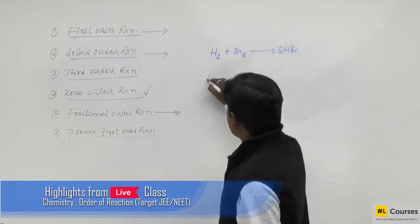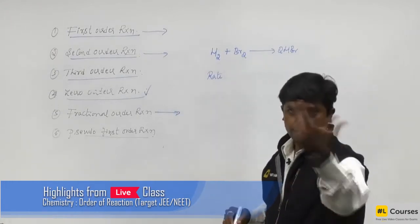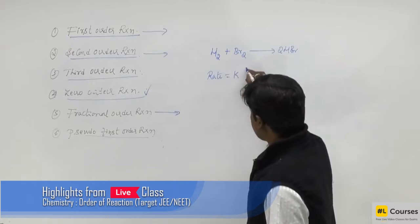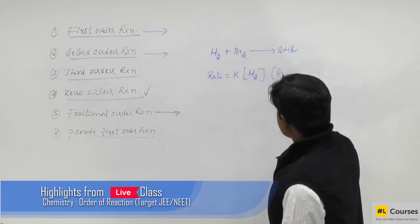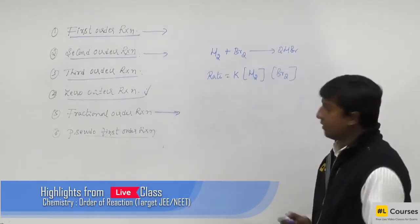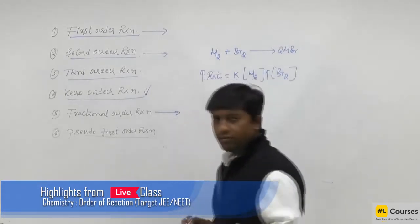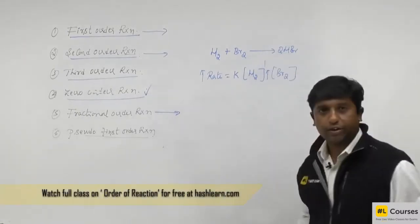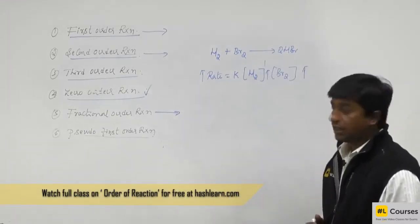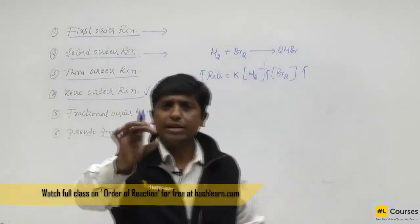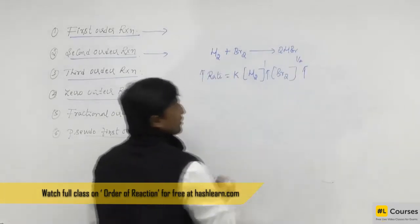Let us write the rate equation. The rate is directly proportional to the concentration of hydrogen and bromine. So rate equals K times the concentration of hydrogen times the concentration of bromine to the power half. When you increase the concentration of hydrogen by 1 unit, the rate increases by 1 unit, hence the order with respect to hydrogen is 1. If you increase the concentration of bromine by 1 unit, the rate does not increase completely by 1 unit — it increases by half the unit. Hence the order of the reaction with respect to bromine is half.